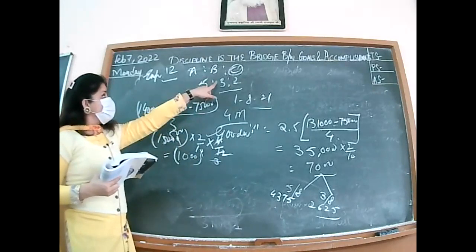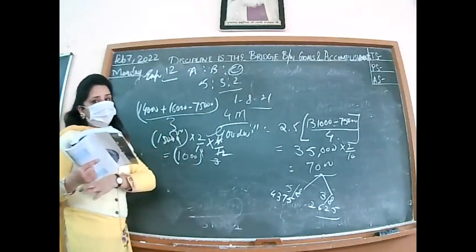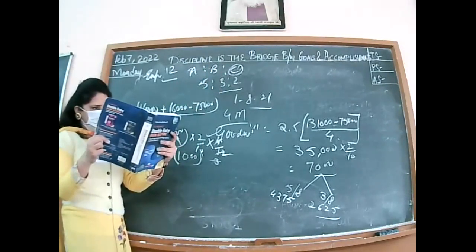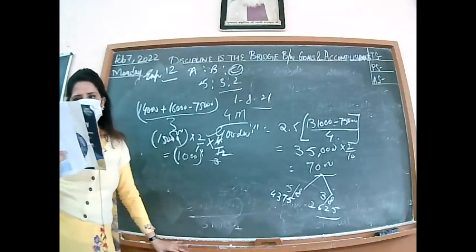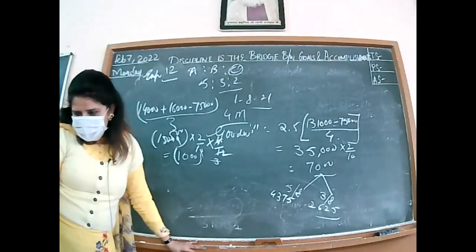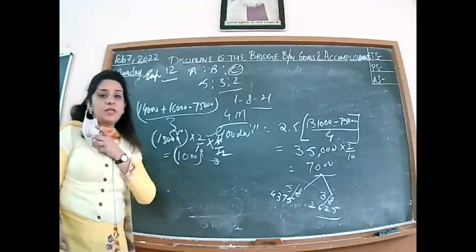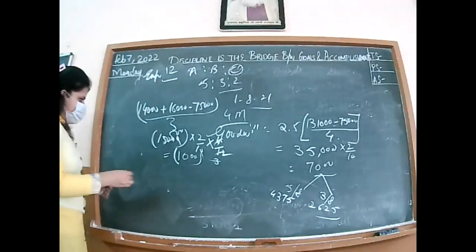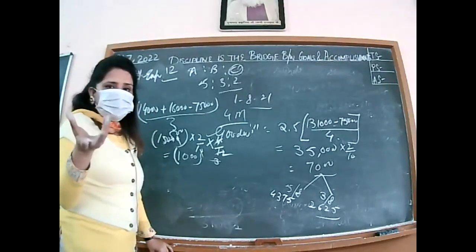Because the remaining partners are not deciding to change their ratio, the journal entry for the profit/loss share comes through P&L Suspense, not from the gaining partner. Since it is a loss, entry: C's Capital Account debit to P&L Suspense Account = 1,000. The P&L Suspense Account has been transferred to his capital account on the debit side in the capital account. Now we proceed to revaluation.